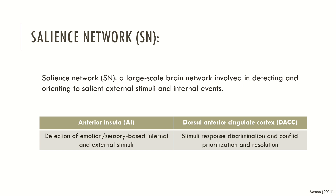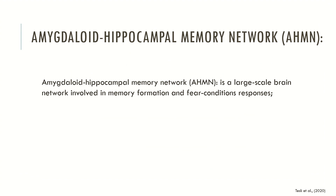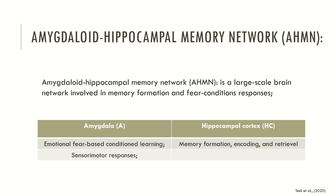Another very important network is the amygdaloid-hippocampal memory network, which is a large brain structure involved in memory formation and fear-conditioning responses. This network involves ramifications in the amygdala, which is typically associated with emotional fear-based conditional learning and somatosensory responses. When we talk about memory, we know we are talking about the hippocampal cortex, which is responsible mainly for memory formation, encoding, and retrieval of memory contents.